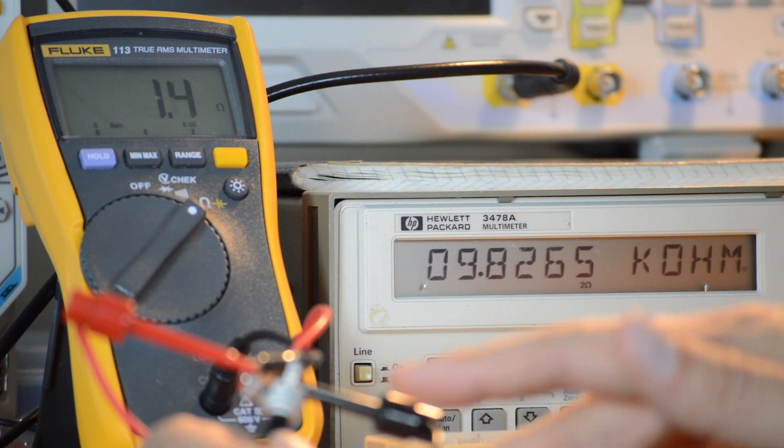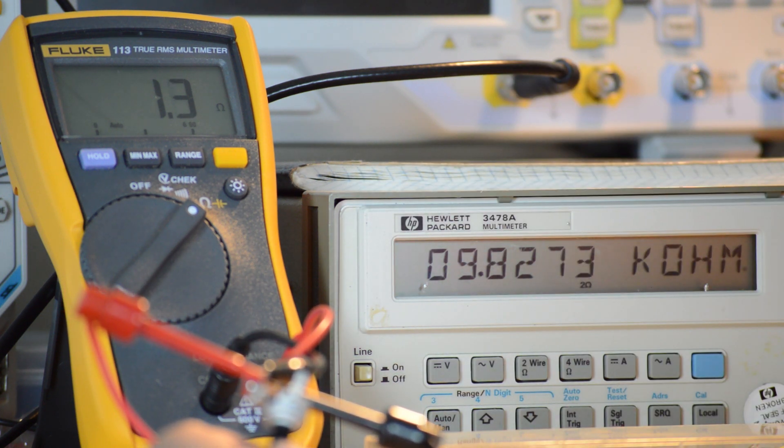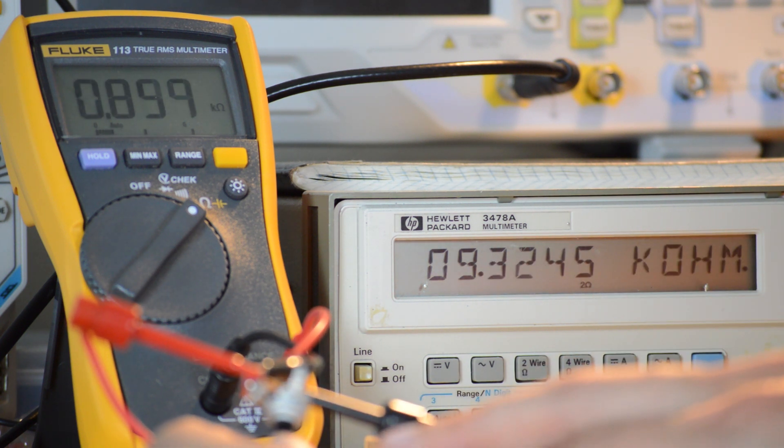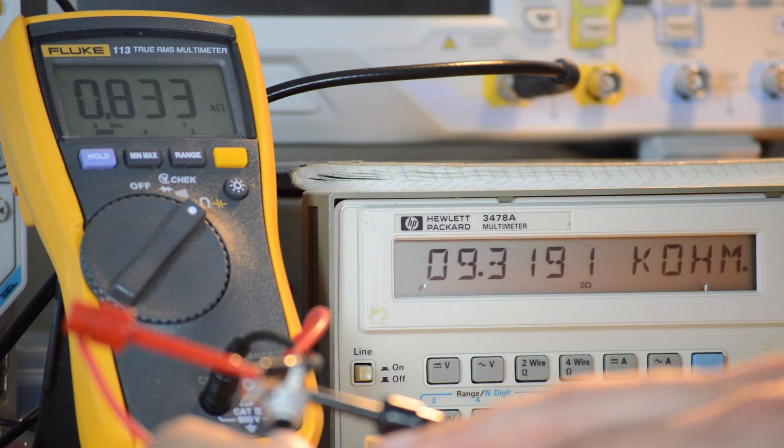As I change the potentiometer you will see how it changes. Currently I have 1.4, 1.3 ohms on one and then almost 10 kilohms on the other. As I turn it, the one on the left, the Fluke, just jumped up to one and the one on the right is now nine.